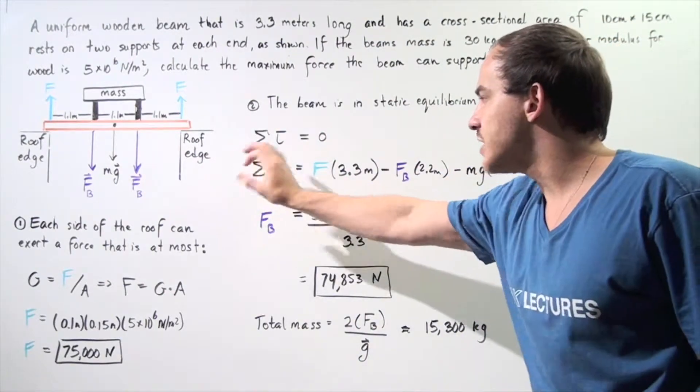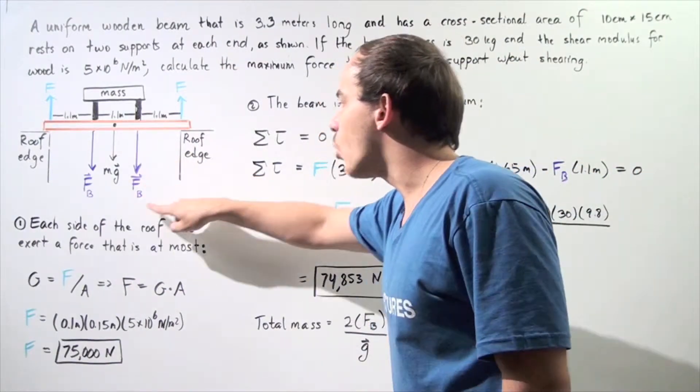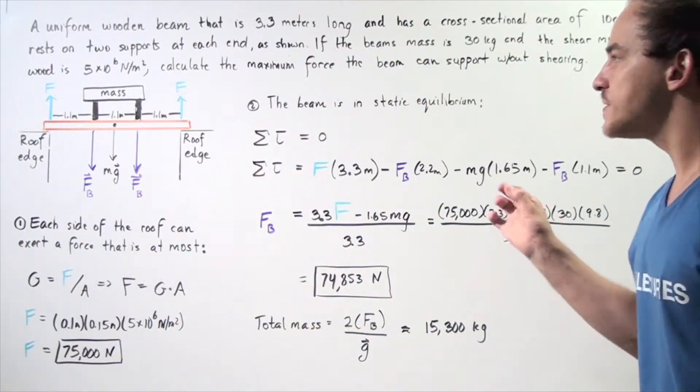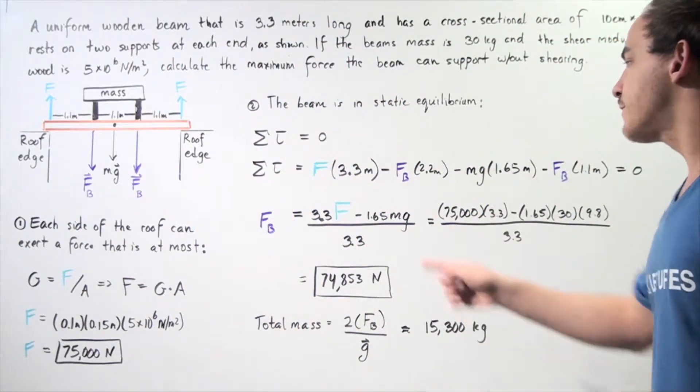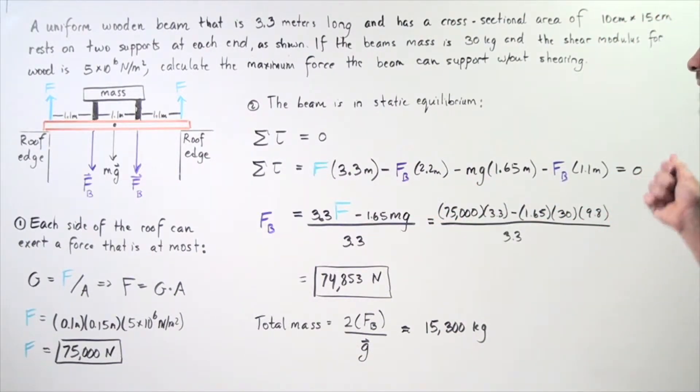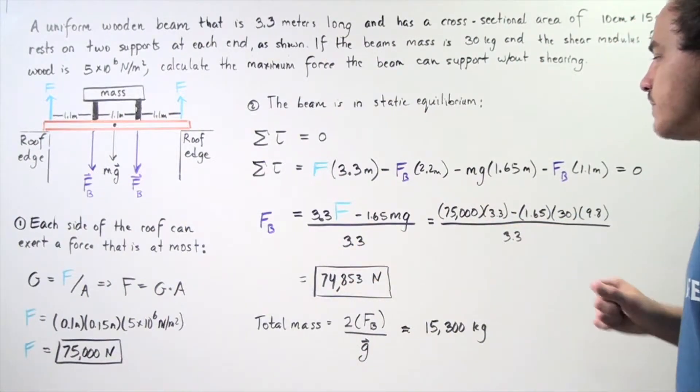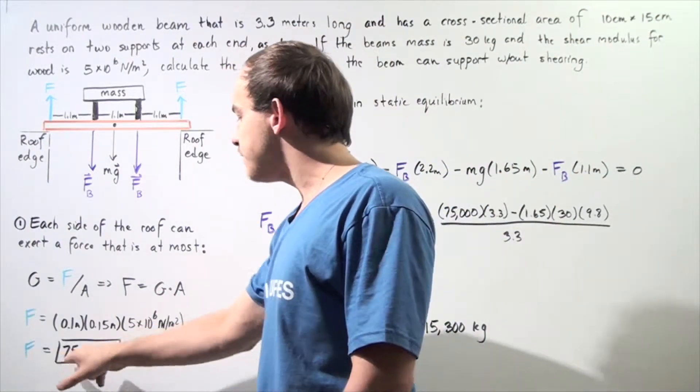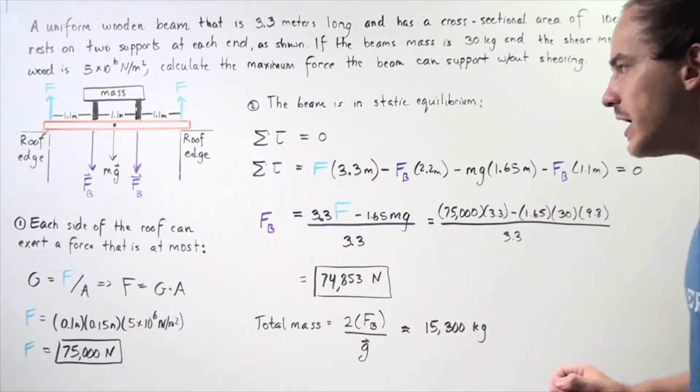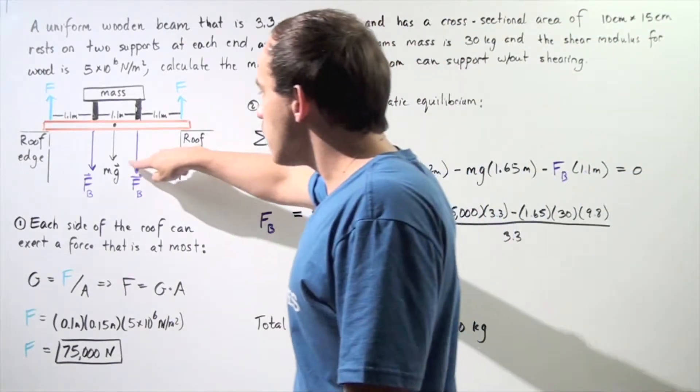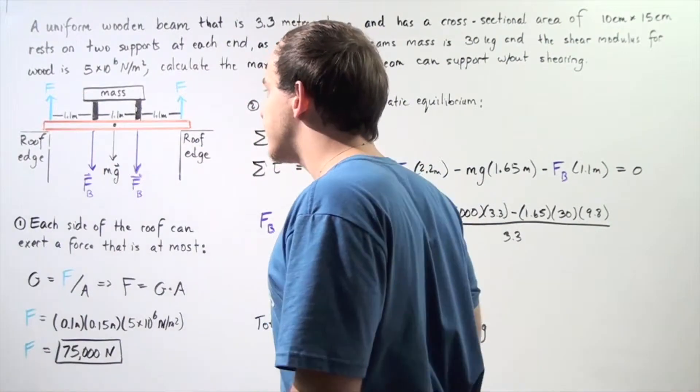So, we take this equation and we solve for force B because this is what we want to find. We see that force B due to one of these legs is equal to 3.3F, so the blue F, minus 1.65 times M times G divided by 3.3. So, this blue force we found to be 75,000 Newton. So, we plug that value in. The mass is 30 kilograms and the G is 9.8 meters per second squared. We plug those quantities in, divide by 3.3,